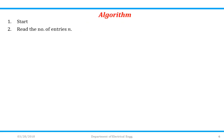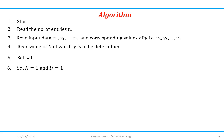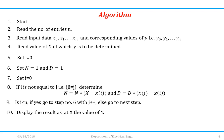Algorithm. Start. Read the number of entries n. Read input data x0, x1 up to xn and corresponding values y0, y1 up to yn. Read the value of x at which y is to be calculated. Set j=0. Set n=1 and d=1, where n is the numerator and d is the denominator. Set i=0. If i is not equal to j, determine n = n × (x - x[i]) and d = d × (x[j] - x[i]). If i < n, go to step 6 with j++, else go to next step. Display the result: at x, the value of y is — and end.